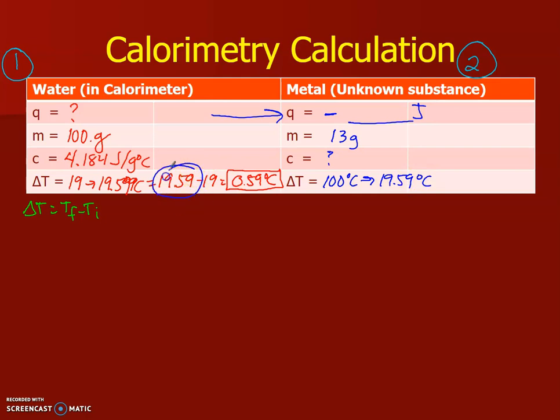You'll see that that 19.59 degrees Celsius is in two places. So what you do is 19.59 minus 100 in order to get negative 80.41 degrees Celsius. So you'll see your delta T here is a negative value.